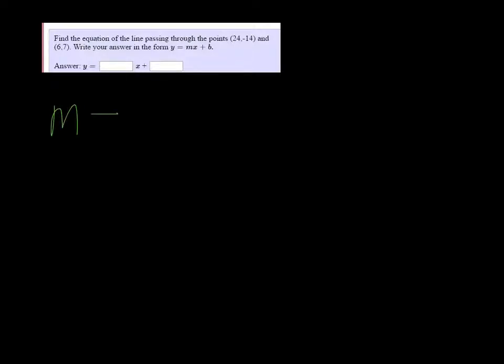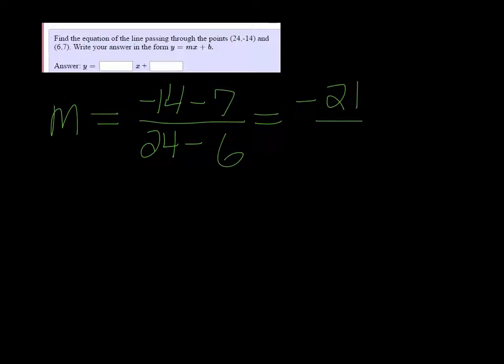So first we need to find the slope. I'm going to use my slope formula. So we have negative 14 minus 7, and 24 minus 6. You might have put yours in the opposite order, and that's fine. We get negative 21 over 18, and that reduces to negative 7 over 6.